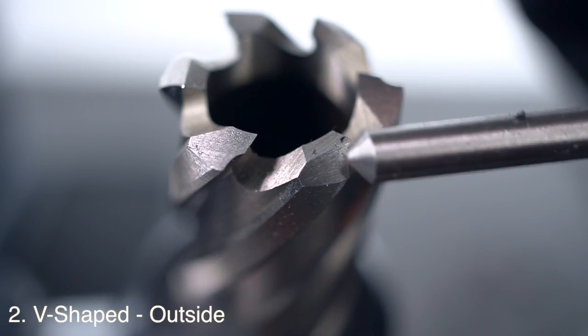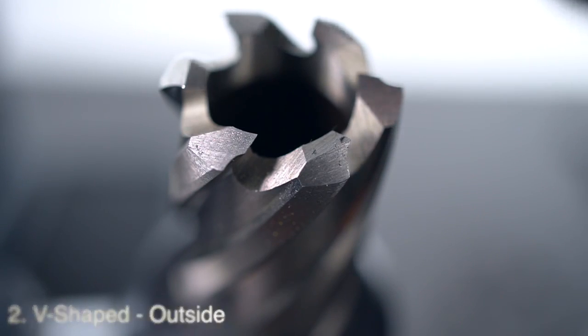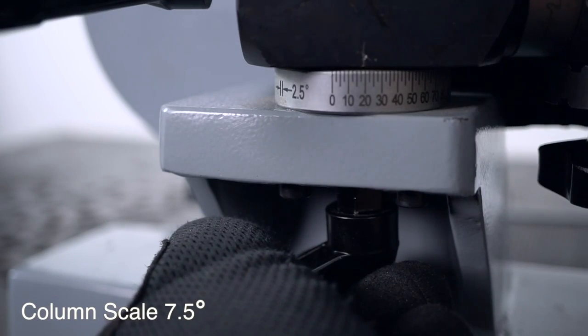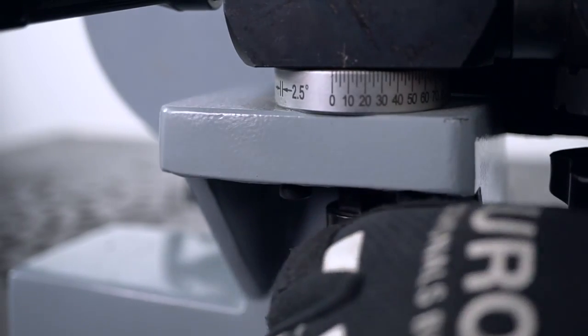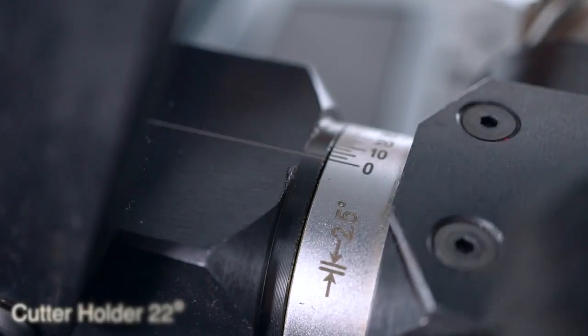The second resharpening position is the outside of the V-shaped teeth. Set the column scale at 7.5 degrees and the cutter holder at 22 degrees.